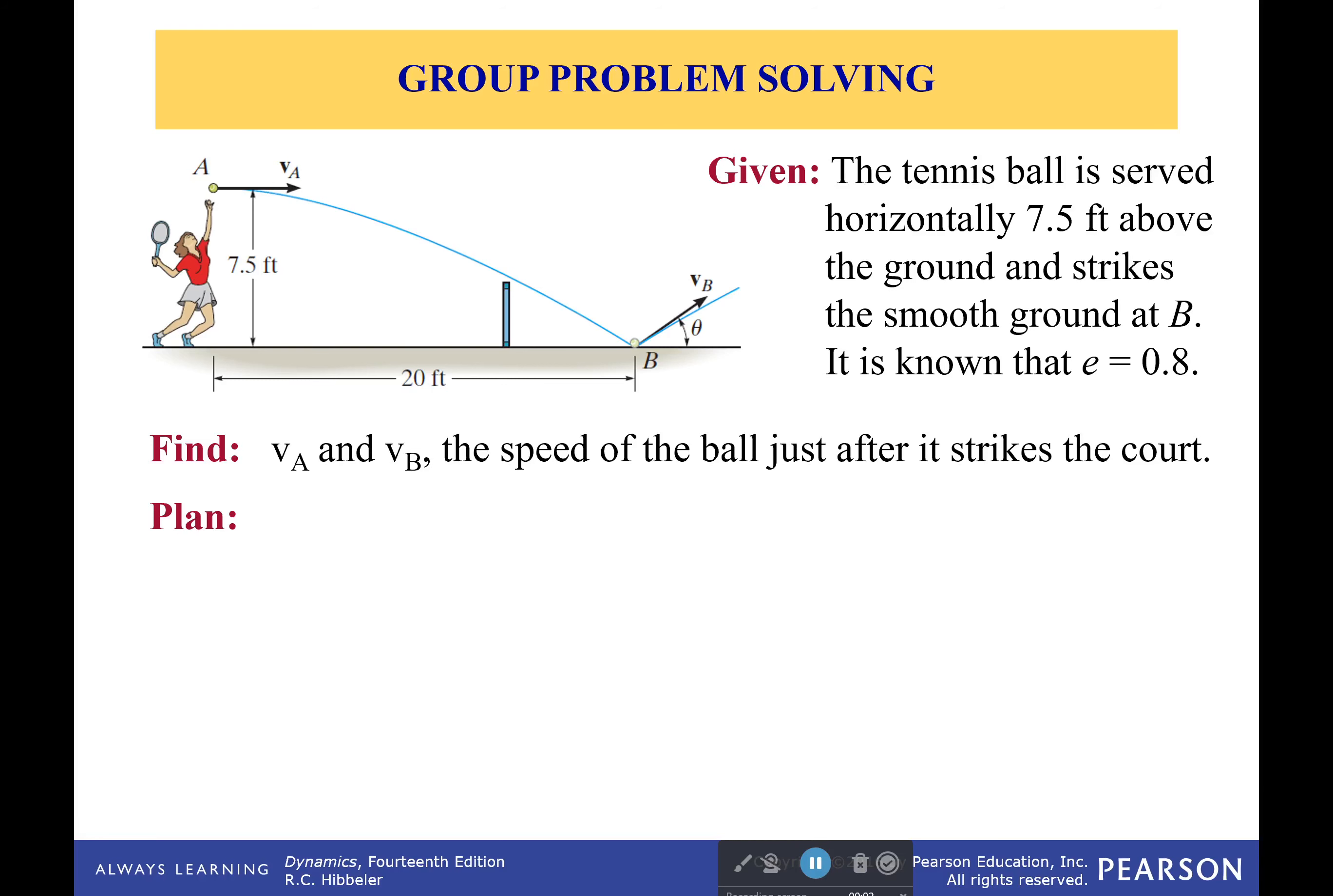Hello everyone and welcome back. So this time what do we have? Well, we have a tennis ball and it's being served horizontally. The person is 7.5 feet above the ground when they strike the ball and it strikes the smooth ground at B. It's known that the coefficient of restitution is 0.8.